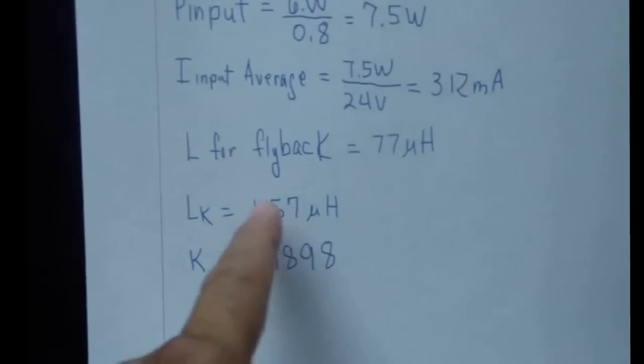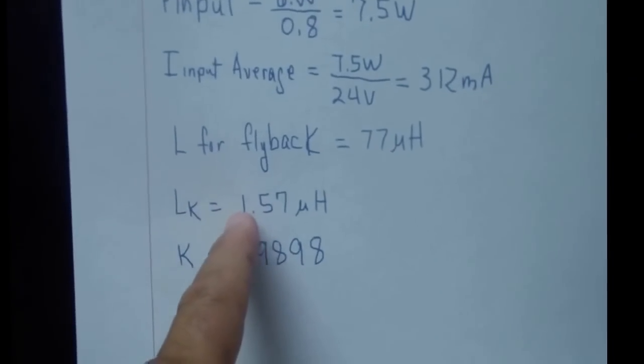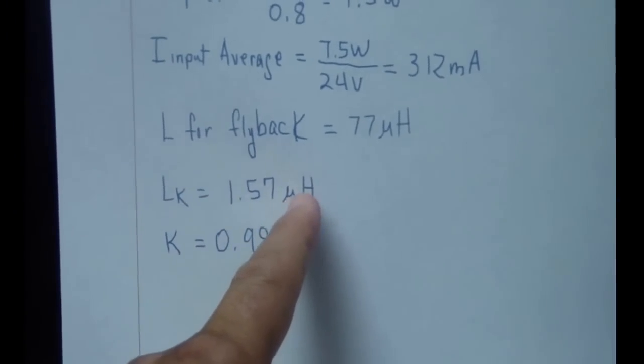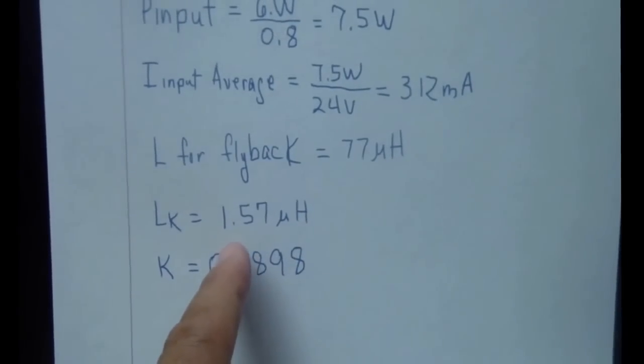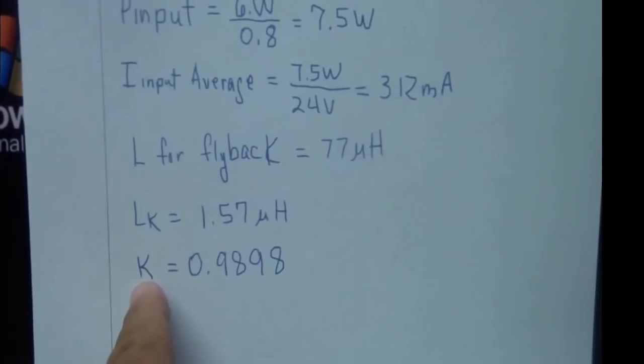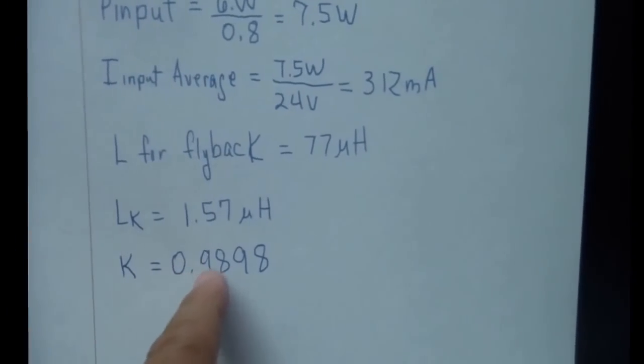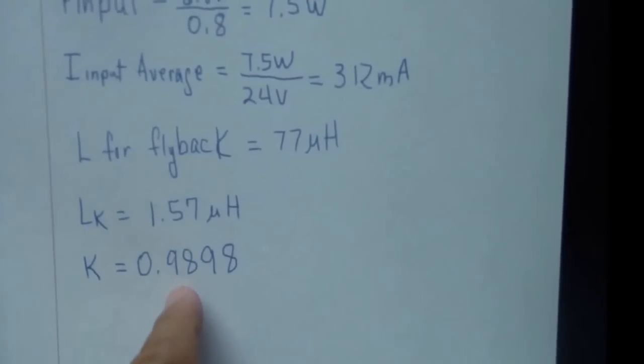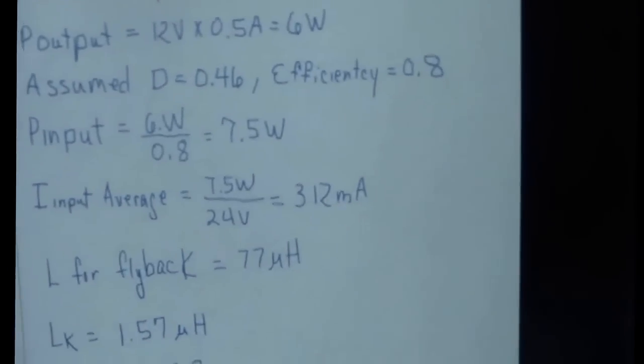I also showed that I shorted the secondary and measured the primary with the secondary shorted, and I measured a leakage inductance of 1.57 microhenries. So once you plug it into the equation, I came up with a coupling coefficient of 0.9898 for the transformer.